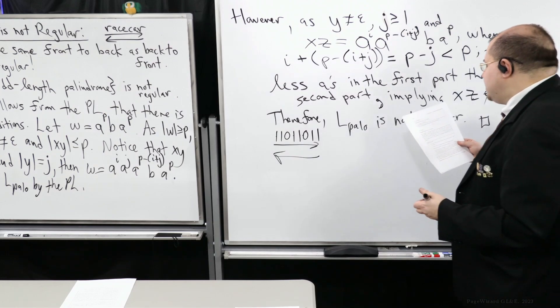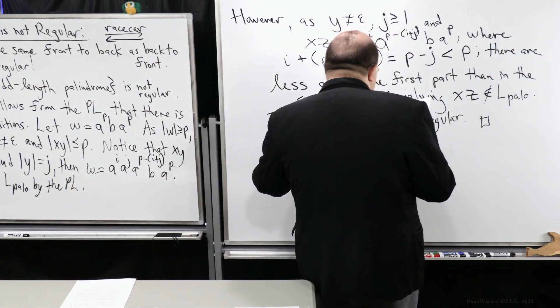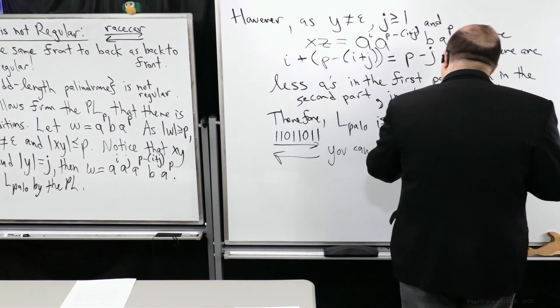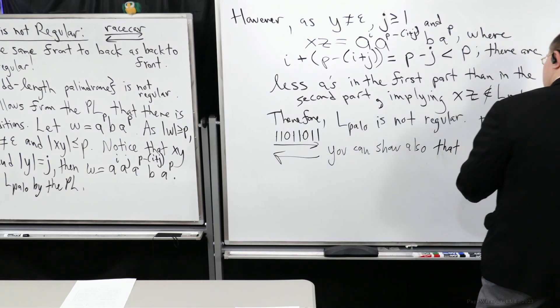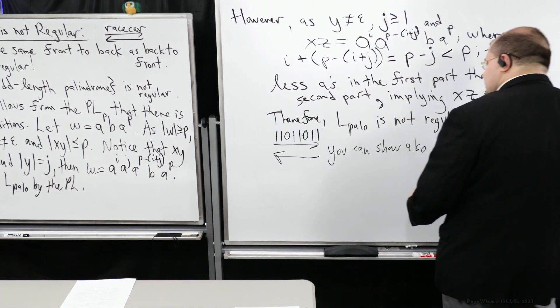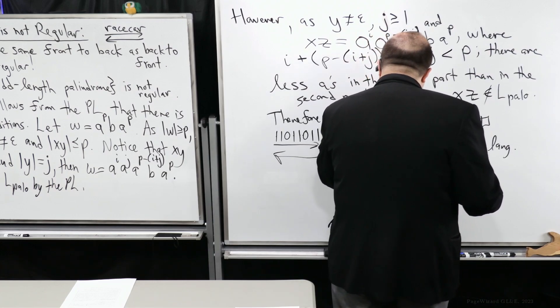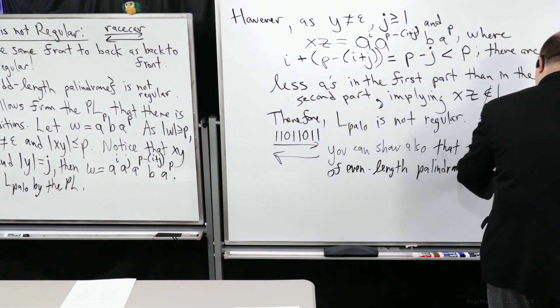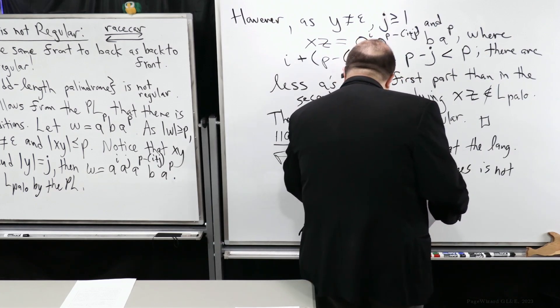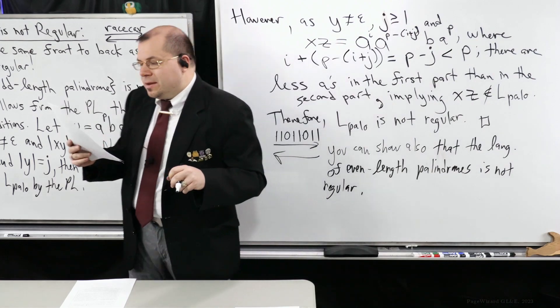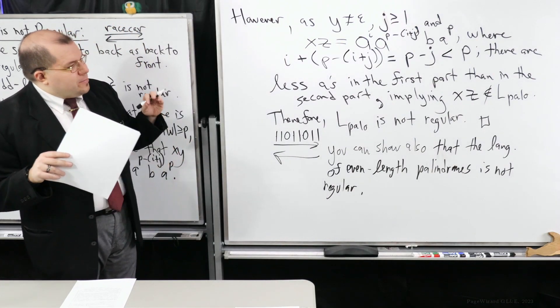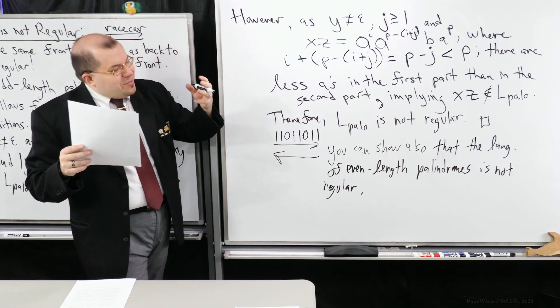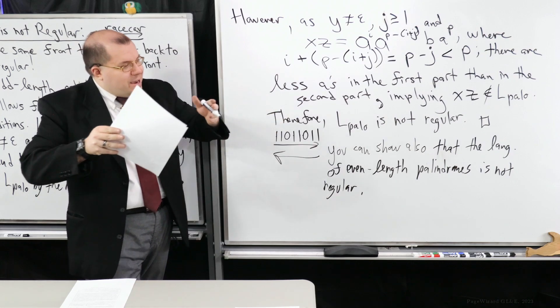No. You could show also that the language of even length palindromes is not regular. You might ask, Dan, how would I go about that? I'll give you a tip. It's not really that much of a change. But we need to make sure we keep in mind, we come back to something that we've seen in one of our first examples. We want to compare two parts, and they have equal numbers.